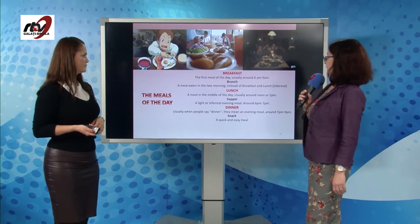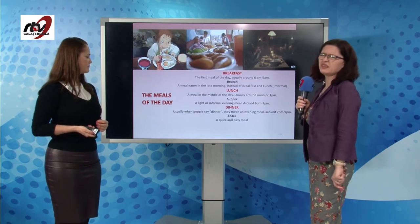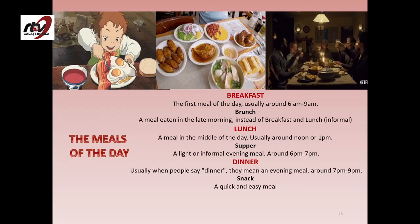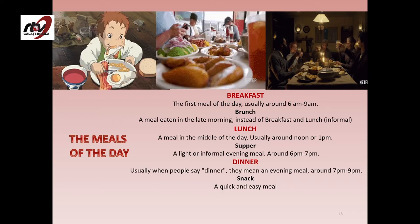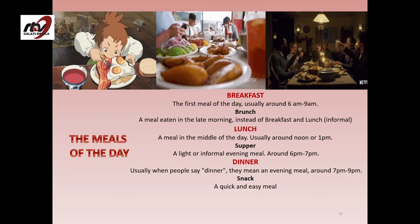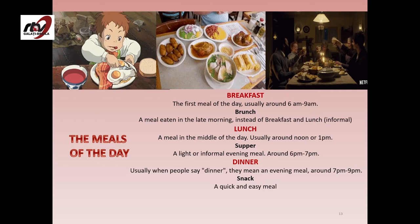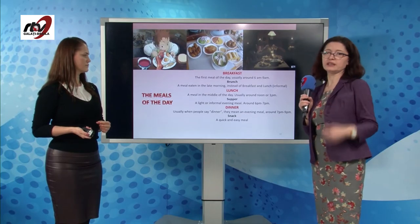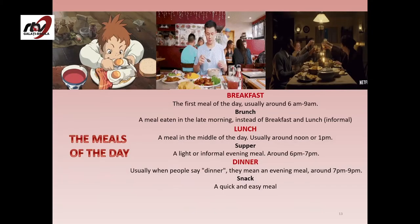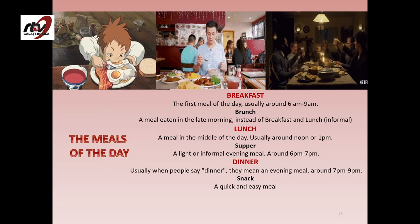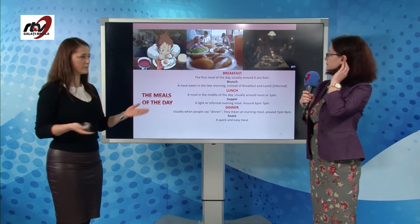Now let's talk about the meals of the day. In the morning you have breakfast, the first meal of the day, usually around 6 to 9 a.m. But if you wake up later, you can have a meal in between called brunch — breakfast and lunch together, eaten in the late morning. Then there's the traditional lunch, a meal in the middle of the day, usually around noon or 1 p.m. Then there's dinner, from 7 to 9 p.m. Between lunch and dinner, we can have supper, which is a light or informal evening meal. During the day, you can also eat snacks — quick and easy meals like fruit or crisps or biscuits. Stick to healthy snacks like apples.